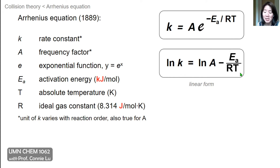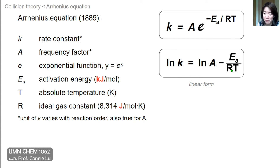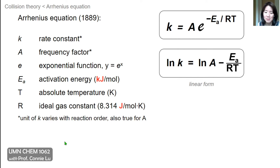In the linear form, it's easier to see how activation energy and temperature influence the rate constant K. If you raise the activation energy, because of the negative sign in front of that last term, you will lower the rate constant. If you raise temperature — because it is in the denominator of that last term with a negative sign — you will actually increase the rate constant.